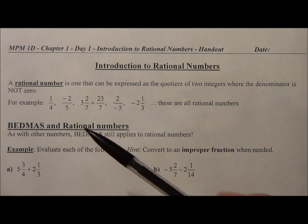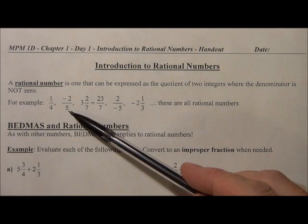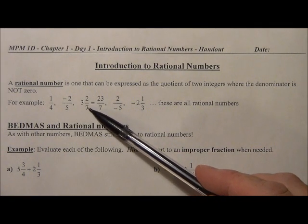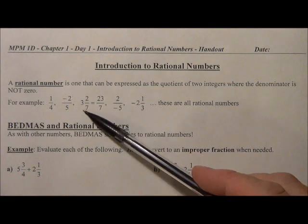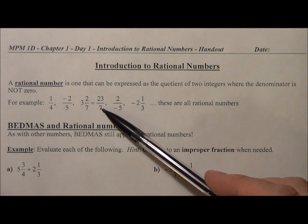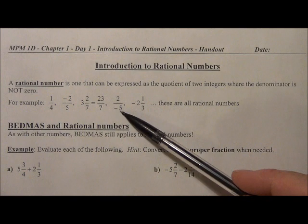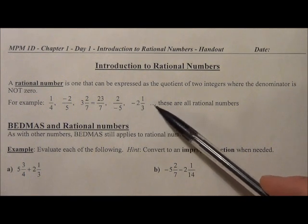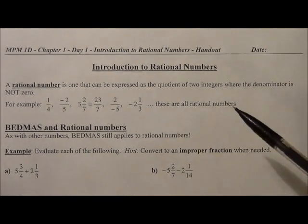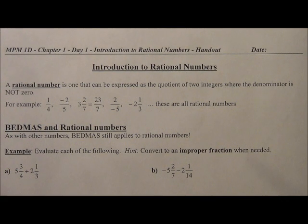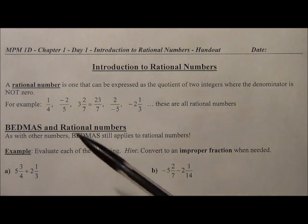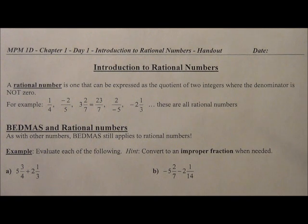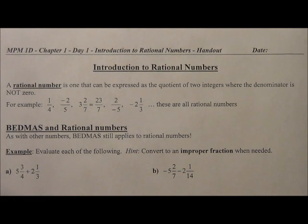So for example, we can have 1 over 4, negative 2 over 5, 3 and 2 sevenths as a mixed number which can be rewritten as an improper fraction as 23 sevenths, 2 over negative 5, negative 2 and 1 third. There are many different examples of rational numbers. It's just a quotient or basically a set up of a fraction of two integers making sure that the denominator is not zero.